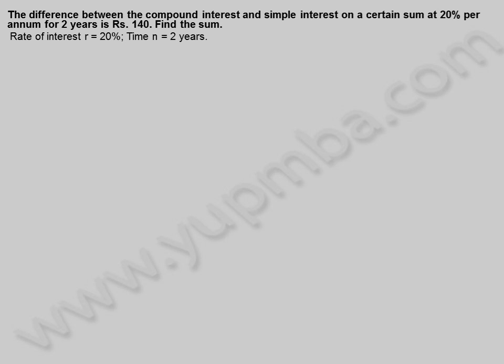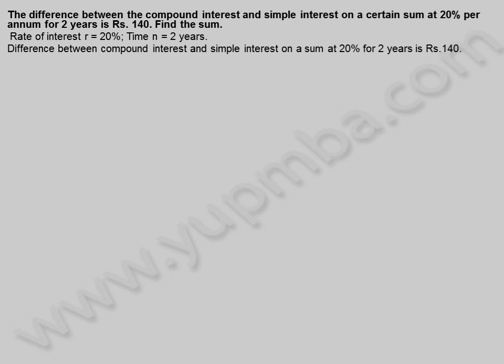The difference between the compound interest and simple interest on a certain sum at 20% per annum for 2 years is 140 rupees. Find the sum. Rate of interest R is equal to 20%, time N is equal to 2 years. Let the principle be X rupees.